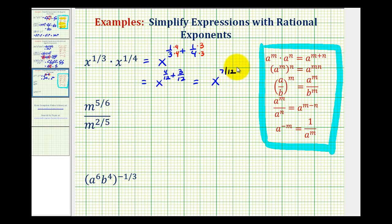Looking at the second example, we're dividing and the bases are the same. So now we need to subtract the exponents. So this would be equal to m to the power of five-sixths minus two-fifths.